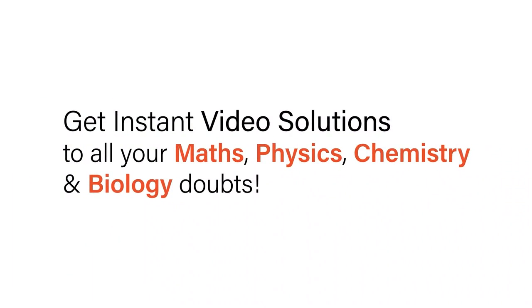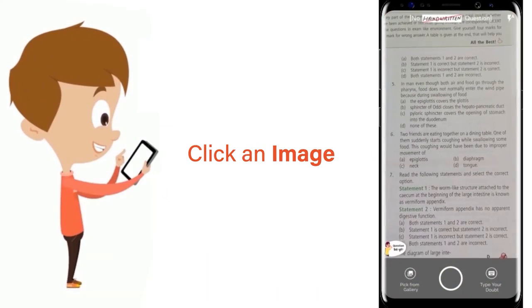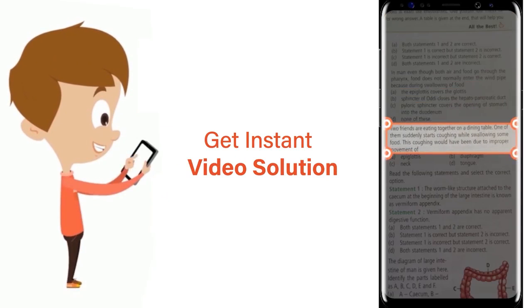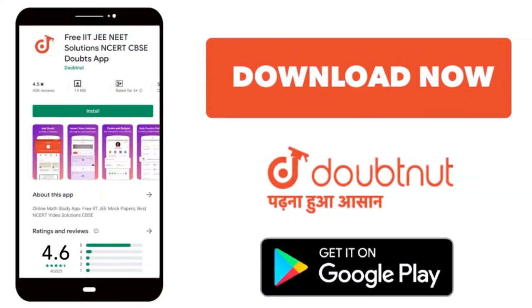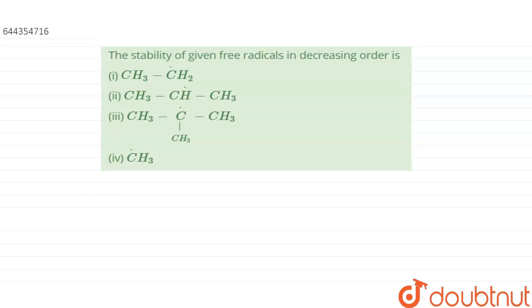With Doubtnet, get instant video solutions to all your maths, physics, chemistry, and biology doubts. Just click the image of the question, crop the question, and get instant video solution. The question is: the stability of the given free radicals in decreasing order is. We have to tell which is the decreasing order of the stabilities of these radicals.